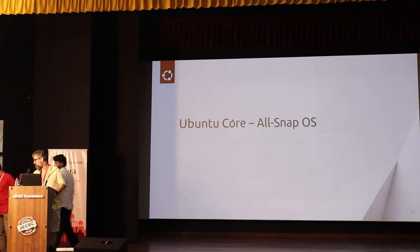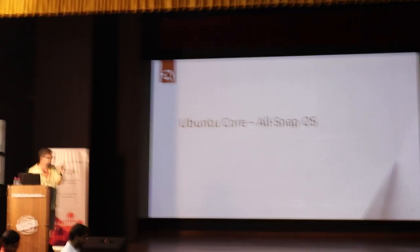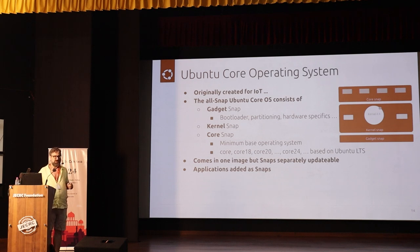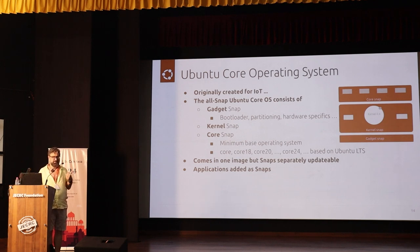Now we come to the all-snap operating system, Ubuntu Core. When Snap was developed, Ubuntu Core was also developed — it was all conceived as a complete concept for IoT: an IoT operating system with easy atomic updates and an immutable operating system with immutable snaps for applications. This gave a very easy operating system for appliances, IoT, and embedded devices.